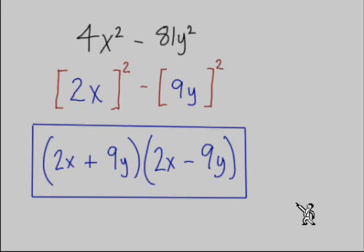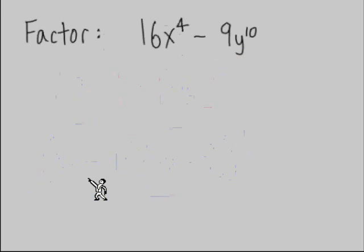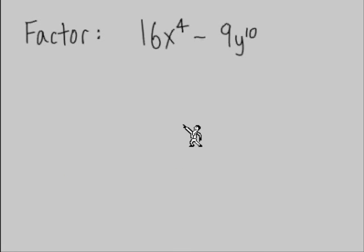Let's use that same approach on this problem. We see a polynomial. It has two terms. They perhaps appear to be squares. Each term appears to be a square.